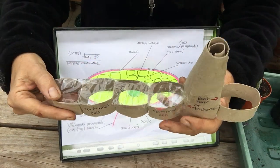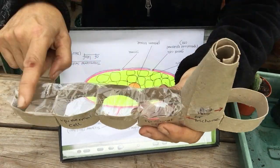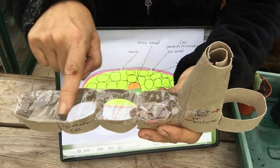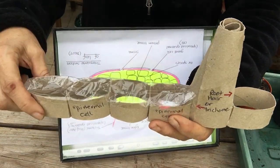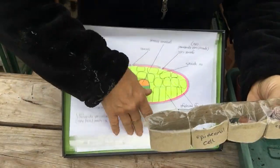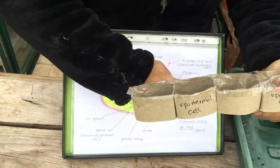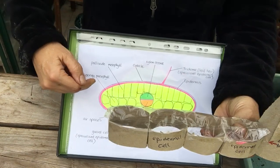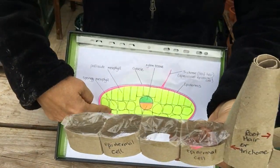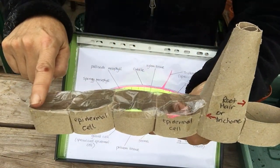If we look at the top of this, I put some sellotape there and that represents the cuticle. So on the surface of the leaf, the cuticle is particularly important. It is on the bottom as well but it prevents water loss.